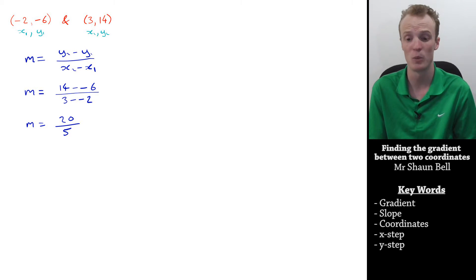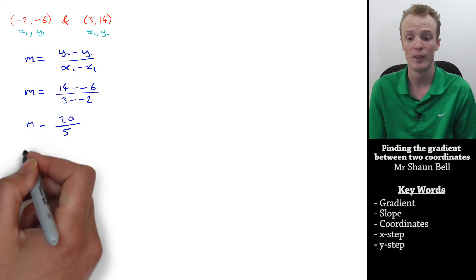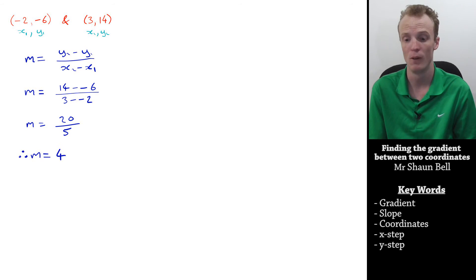But, this is the same as saying 20 divided by 5. So, therefore, our gradient is actually equal to 4.